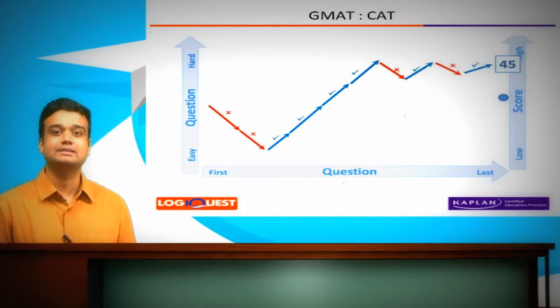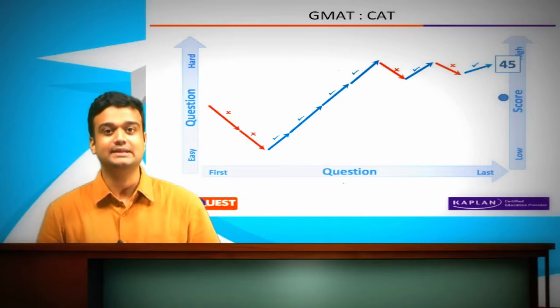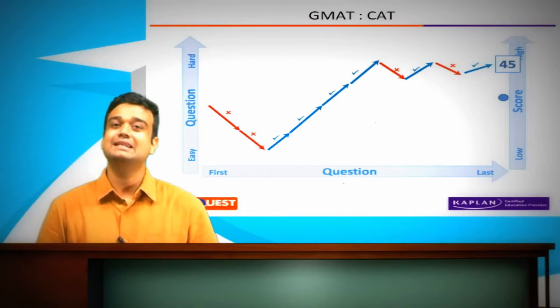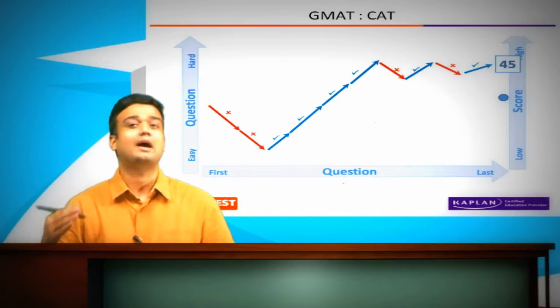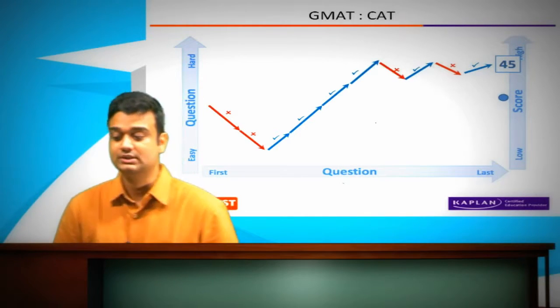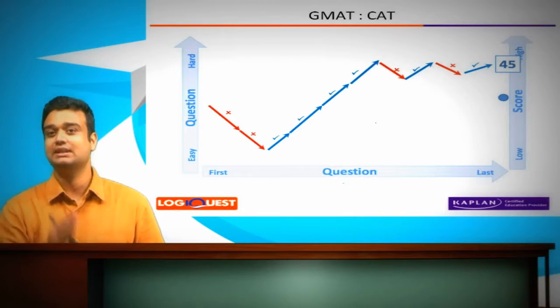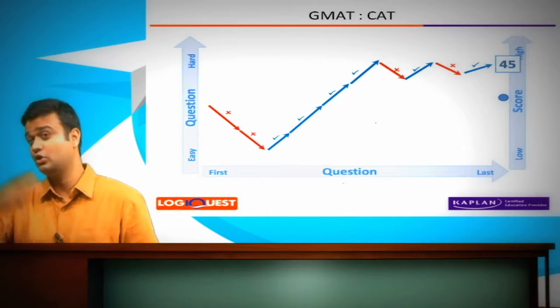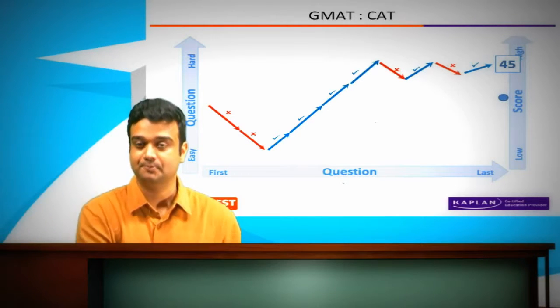So we saw how the GMAT is a computer adaptive test, right? What that means is that the test continually assesses and tries to gauge what your ability level is. So it's a dynamic test, it's not a linear test, where every question that you're going to see will be determined by your performance previously.